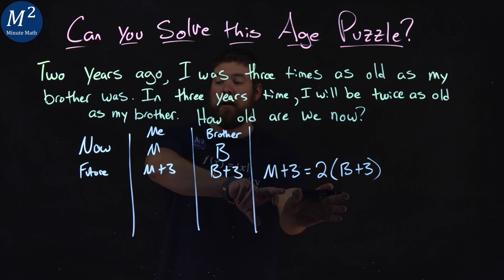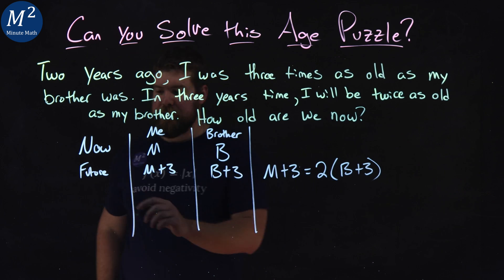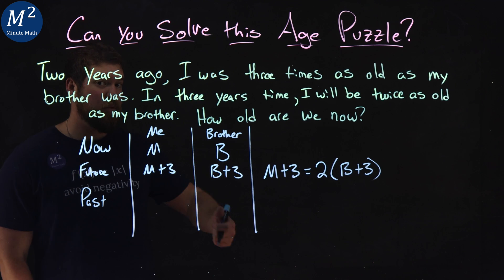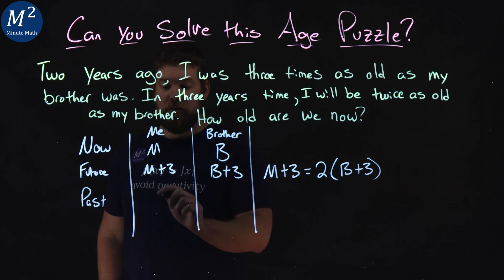Now we have a formula that talks about the future. Let's talk about the past. In the future we're adding, in the past we're subtracting ages.